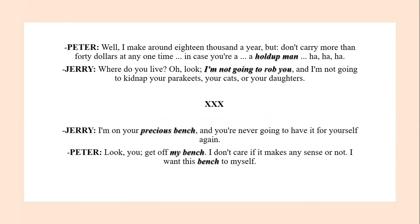Here is a quotation from their conversation. Jerry says: 'I'm on your precious bench, and you're never going to have it for yourself again.' Peter says: 'Look, you — get off my bench. I don't care if it makes any sense or not. I want this bench to myself.' You can feel the tension between them. It is just a public place and a public bench that anyone can sit on, so there must be something beyond the bench.